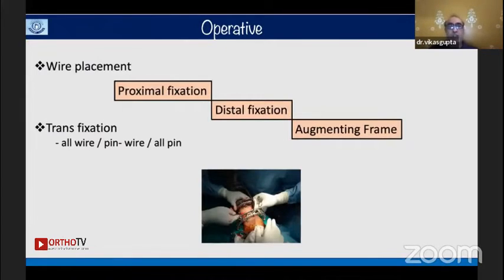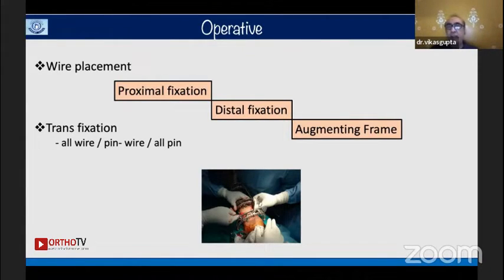For the operative steps, the frame placement requires a proximal fixation and a distal fixation using a reference wire so the frame is adequately placed in both coronal and sagittal planes. You then augment the frame by placing other wires — it can be an all-wire frame as I use in tibia, a hybrid pin-wire fixation, or all-pin which adult surgeons may prefer.